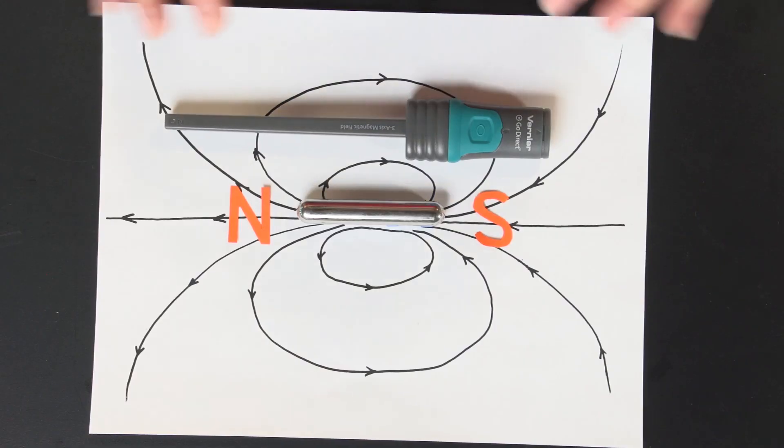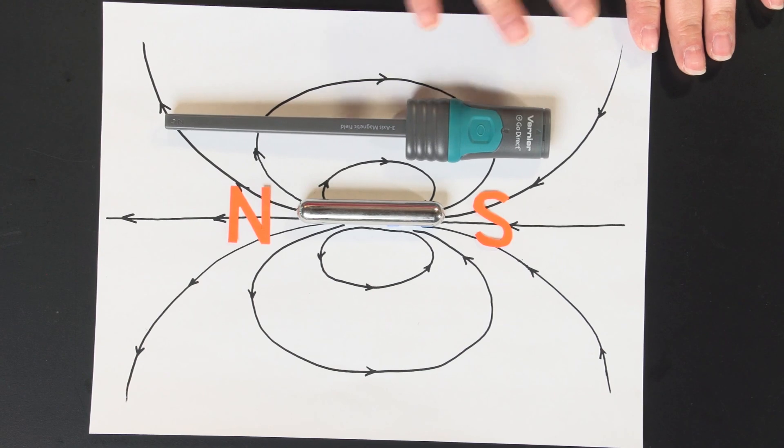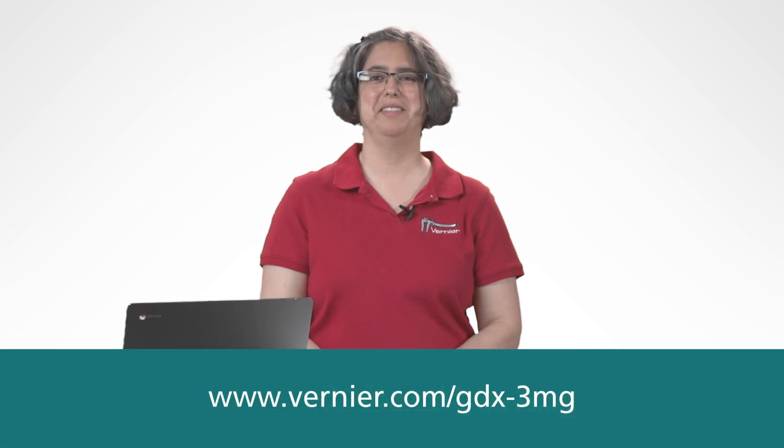So you can relate what you get in the measurements directly to what you know the magnetic field looks like. There are many more experiments that you can do with this sensor. For more information, visit our website.